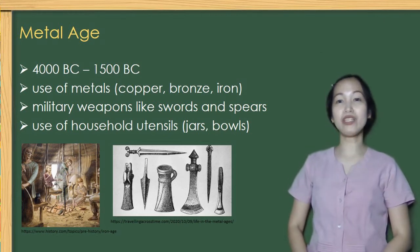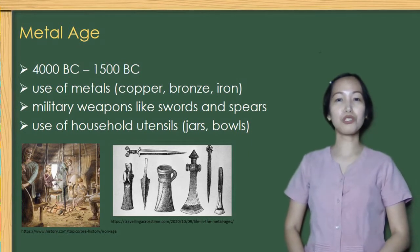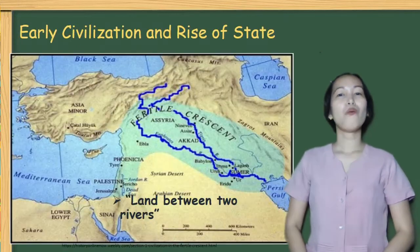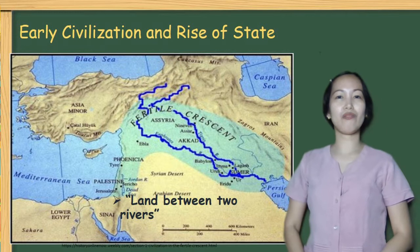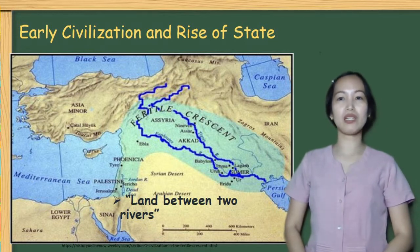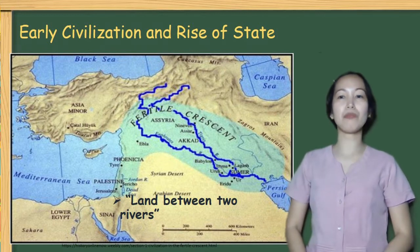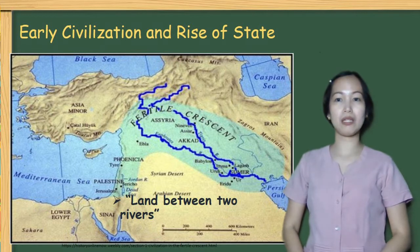Likewise, a more developed social, cultural, political, and economic system emerged. One of the earliest states and civilizations was founded in the Fertile Crescent, known as the Mesopotamian civilization. The word Mesopotamia is a Greek word for 'land between two rivers,' which is often referred to as the cradle of civilization.